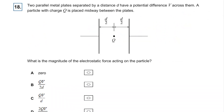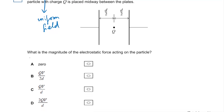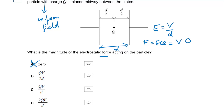Question eighteen: two parallel plates — we know that means a uniform field. What's the magnitude of the electrostatic force? The electric field strength inside is just V over D. The force equals EQ, so that equals VQ over D. Just because the particle is in the middle of the field doesn't mean the force is different — the force anywhere inside a uniform field is the same, and that is QV over D. The answer is C.